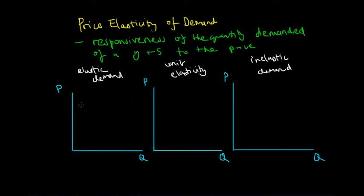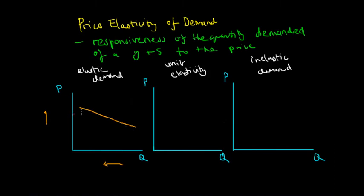The slope of the demand curve is negative, so it is downward sloping as per the law of demand, which suggests that as price increases the quantity demanded decreases. When we have an elastic demand curve, this demand curve is relatively flat.